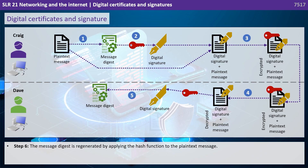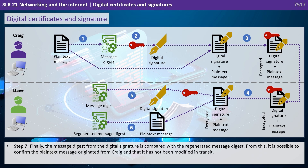The message digest is regenerated by applying the hash function to the plain text message. Finally, the message digest from the digital certificate is compared with the regenerated message digest. From this it's possible to confirm the plain text message originated from Craig and has not been modified in transit.